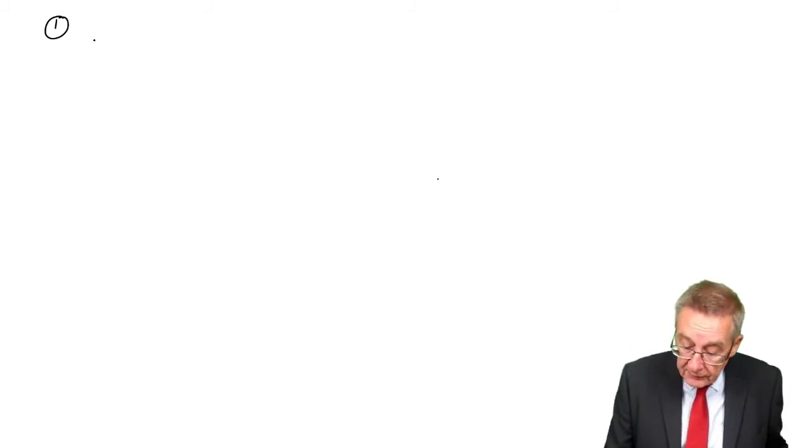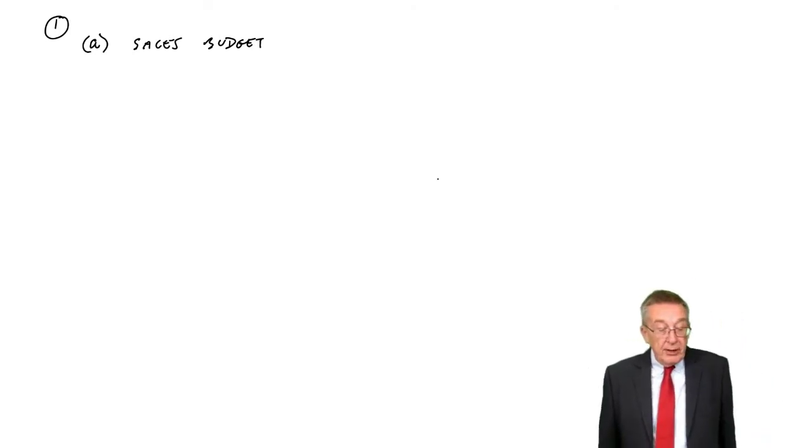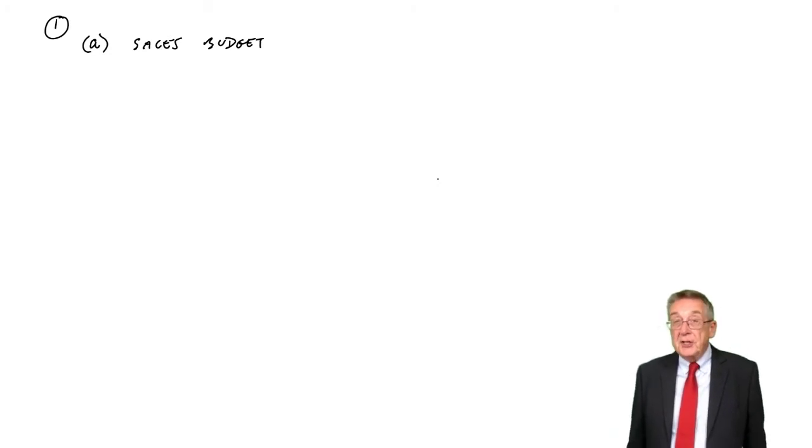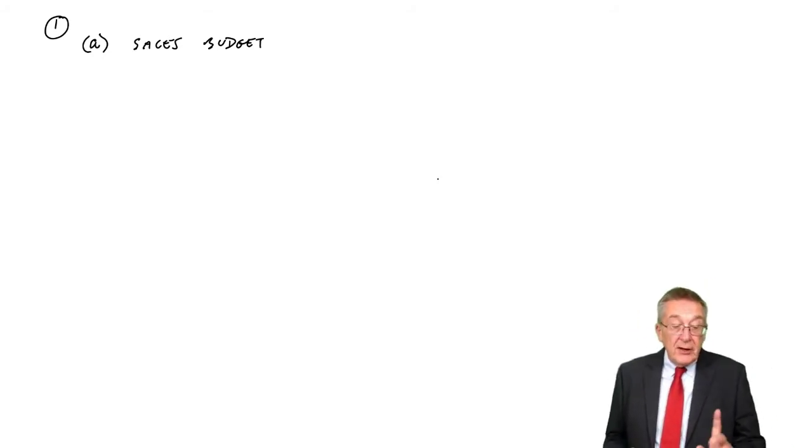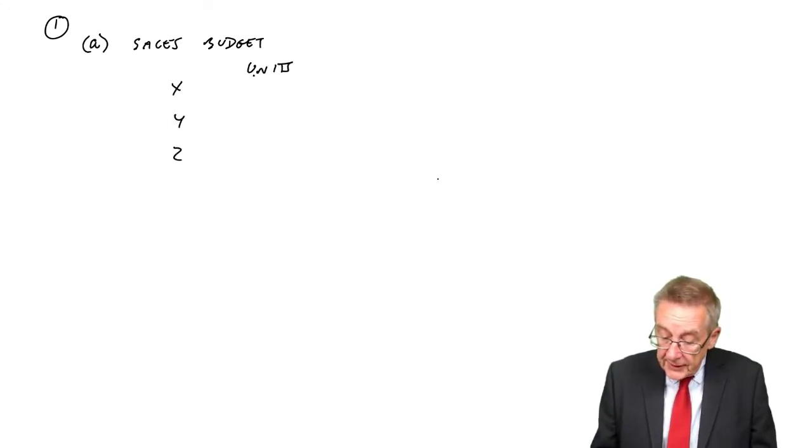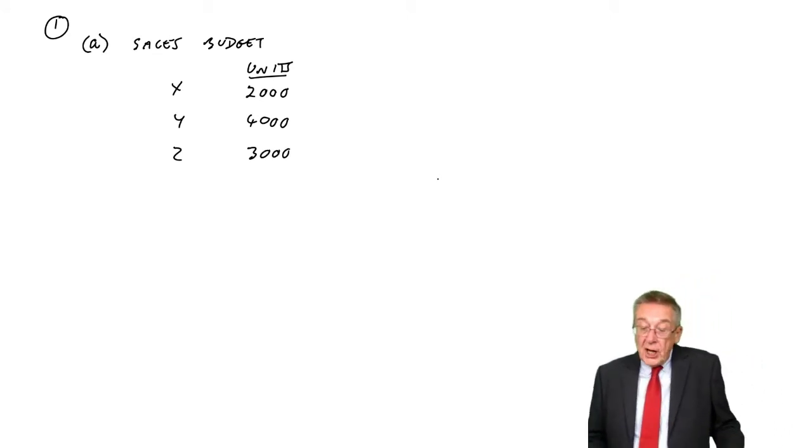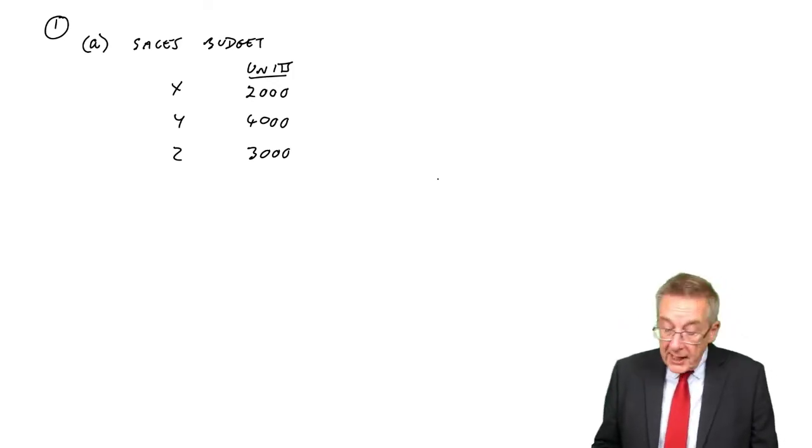Let's go through them one by one. First, we're required to do a sales budget in quantity (how many units do we wish to sell) and also the value. I'll do both at once. This one's easy, because the budgeted sales are given. There are three products, XYZ. In terms of units, we're budgeting on selling 2,000, 4,000, and 3,000.